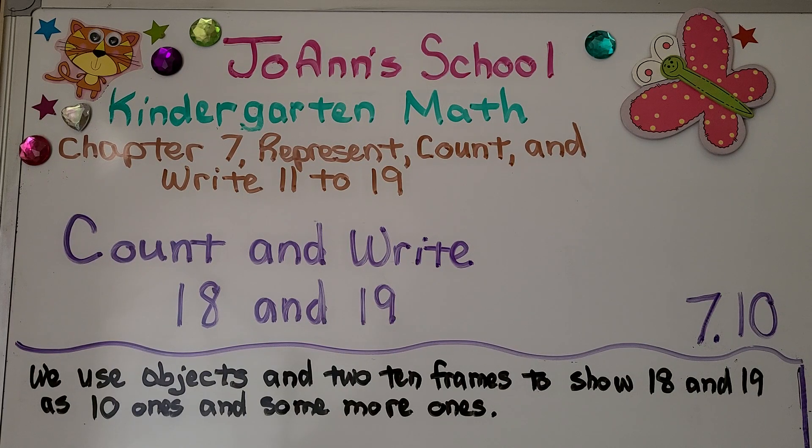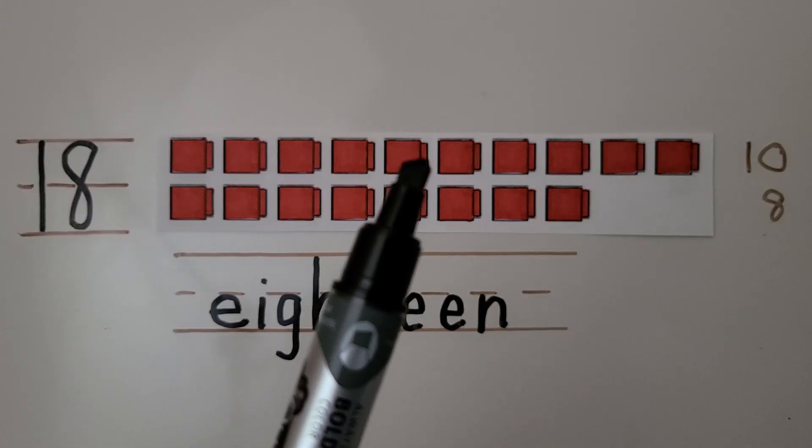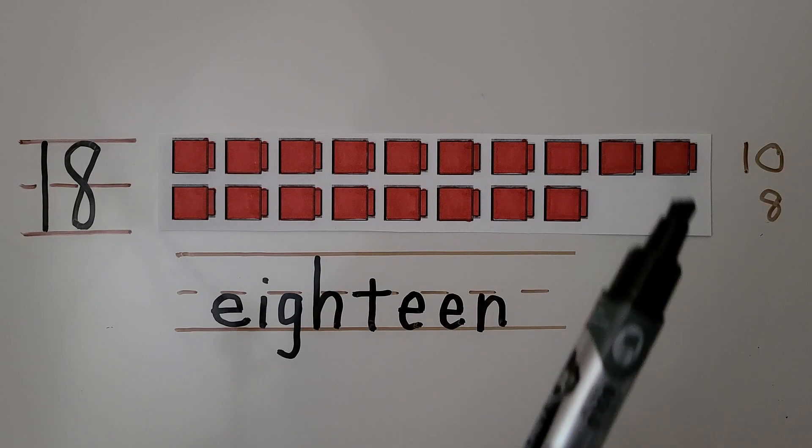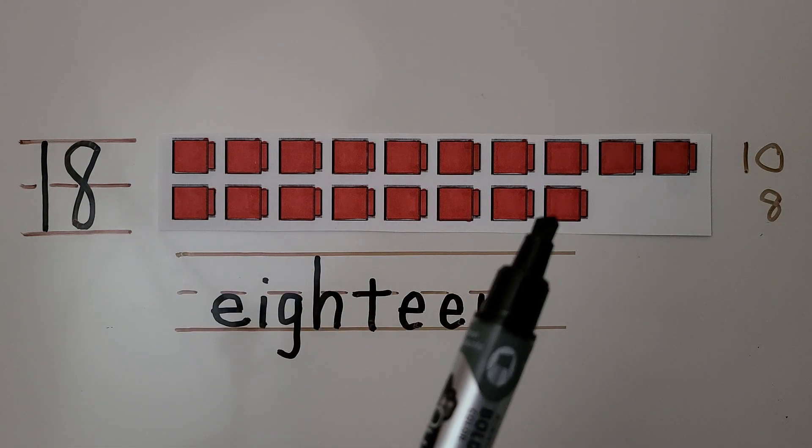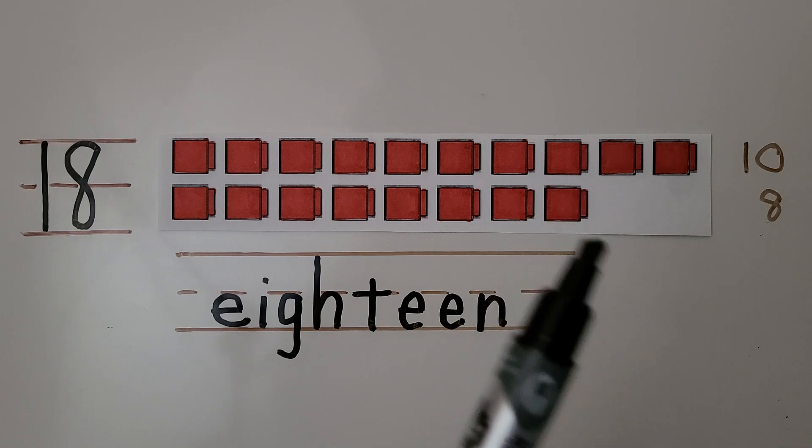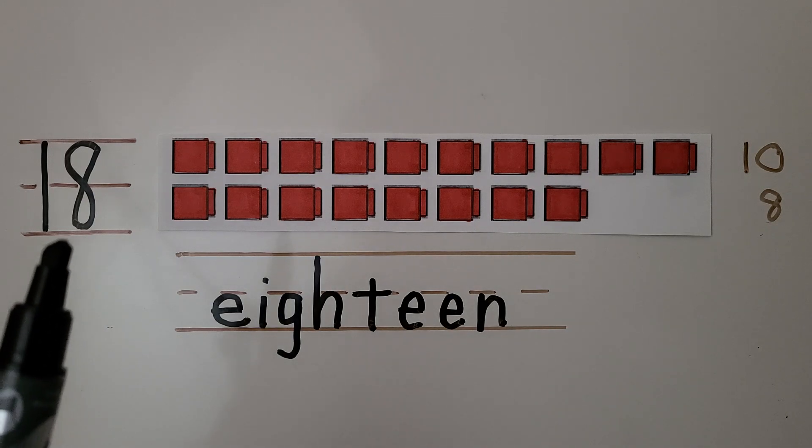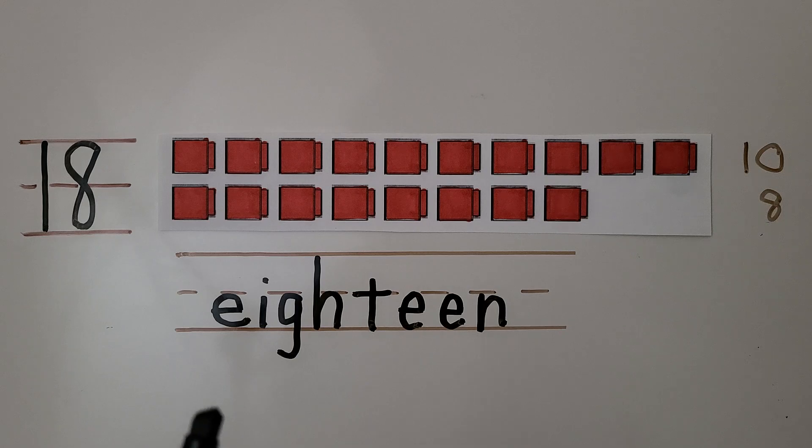Lesson 7.10: Count and write 18 and 19. We use objects in two 10 frames to show 18 and 19 as 10 ones and some more ones. Here we have some red cubes. There are 10 cubes in the top row: 1, 2, 3, 4, 5, 6, 7, 8, 9, 10. There's 8 cubes in the bottom row. There's not 10 because we see two are missing, so it's 8. We have a 10 and an 8. There's 18 red cubes. Here's the number 18, it's a 1 with an 8 next to it. Here's the word 18: E-I-G-H-T-E-E-N.